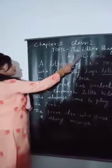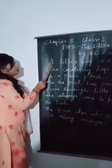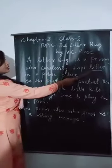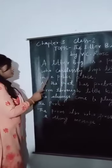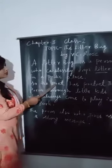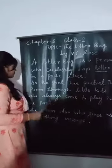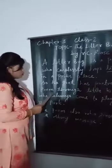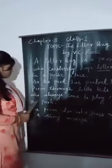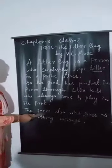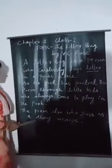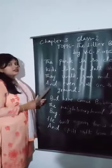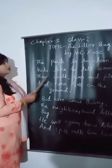Who is a litter bug? A litter bug is a person who carelessly drops litter. Litter means garbage in a public place. So, the poet has portrayed this poem through little kids who always come to play in the park. The poem also gives us a strong message. Now, let's read this poem and see what is in the poem.